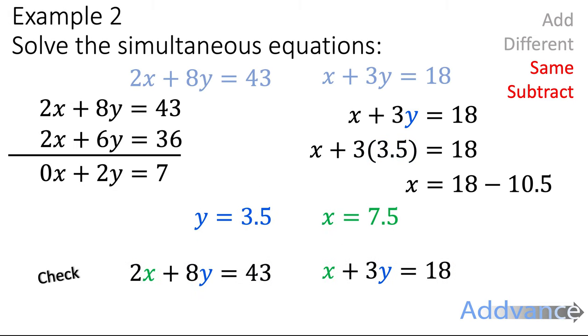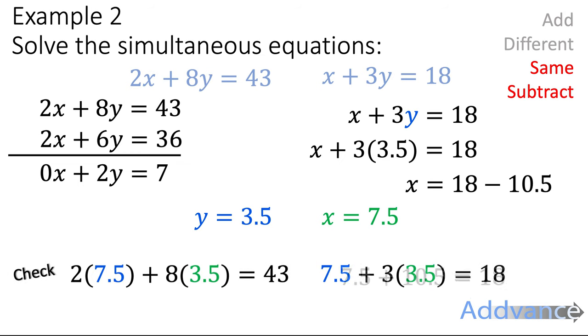We now think that y equals 3.5 and x equals 7.5. We're just going to check that we've got it correct by substituting those into the original two equations and just checking they all add up to be what we expect them to be. So we substitute it in. And 2 times 7.5 is 15. 8 times 3.5 is 28. 15 plus 28 is indeed 43. That works. 7.5 plus 3 times 3.5 is 18. That does work again. Okay, so again, every single time you do a simultaneous equations, put your numbers back in for a super quick check. That gives you complete confidence that you've done it correctly. And we've got that correct. It does work. It satisfies our check.